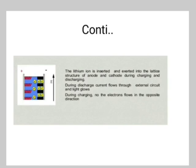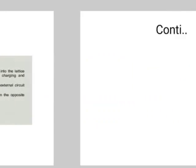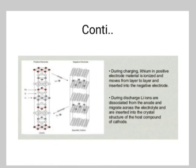The lithium ion is inserted and extracted into the lattice structure of the anode and cathode during charging and discharging. During discharge, current flows through the external circuit and a light glows; during charging, the electrons flow in the opposite direction. During charging, the lithium in the electrode material ionizes and moves from layer to layer, inserted into the negative electrode. During discharge, lithium ions dissociate from the anode, migrate across the electrolyte, and are inserted into the crystal structure of the host compound at the cathode.